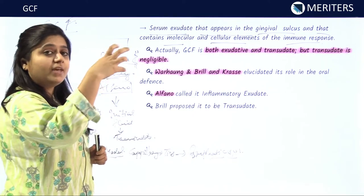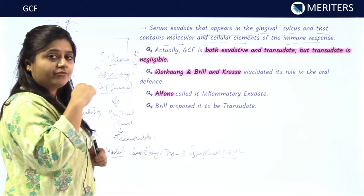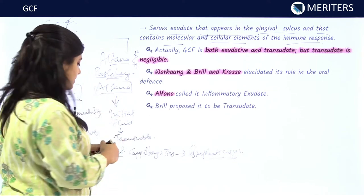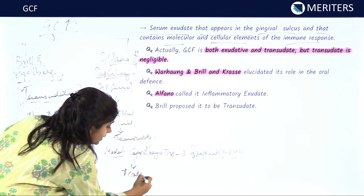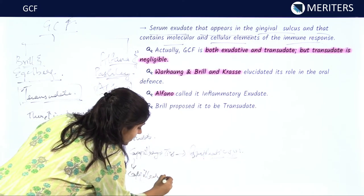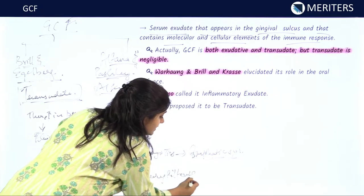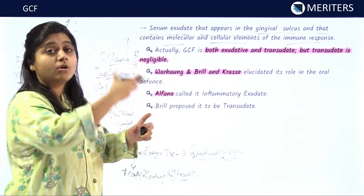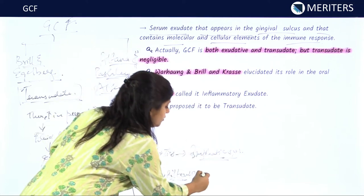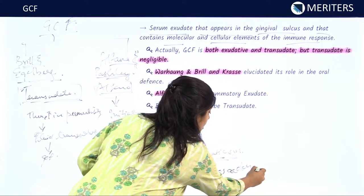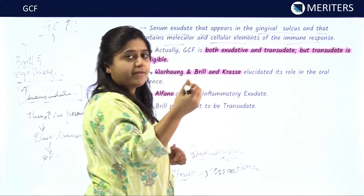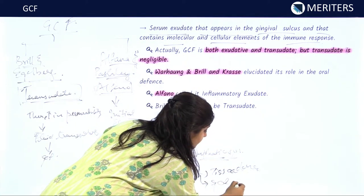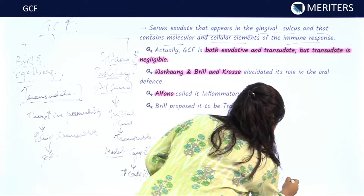Because of the increase in molecular and cellular content of the capillaries, the amount of filtrate coming out of the capillaries also increases. This filtrate cannot be drained at an equal level by the lymphatic system, leading to either tissue edema or the fluid coming out through the junctional epithelium into the mouth, which is known as GCF.